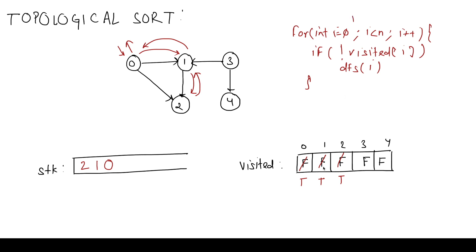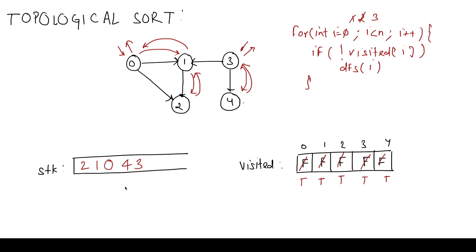In the main loop, i = 1 and i = 2 are already visited, so we move to i = 3. Since visited[3] is false we call DFS. We mark 3 as visited. From 3 we can move to 1 (already visited) or to 4 (unvisited), so we go to 4, mark it as visited. From 4 we cannot go anywhere, so we push 4 onto the stack, then backtrack and push 3. The stack now contains, from bottom to top: 2, 1, 0, 4, 3. Reversing this gives the topological sort order: 3, 4, 0, 1, 2.